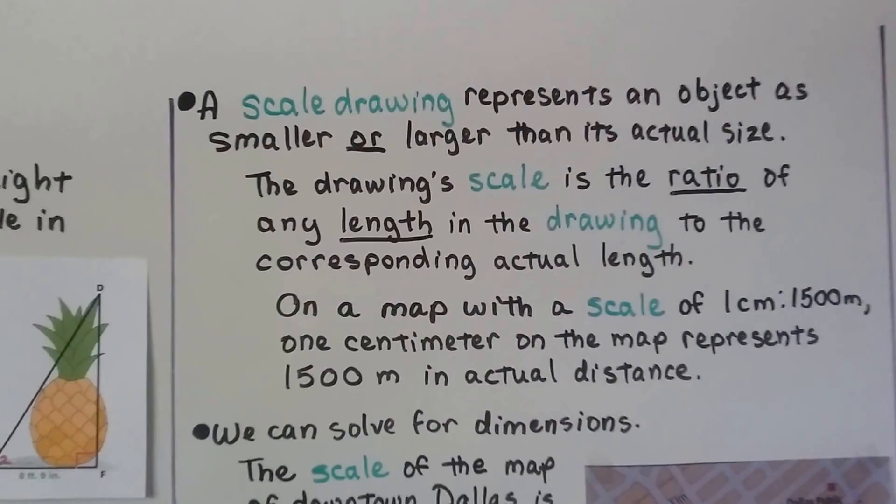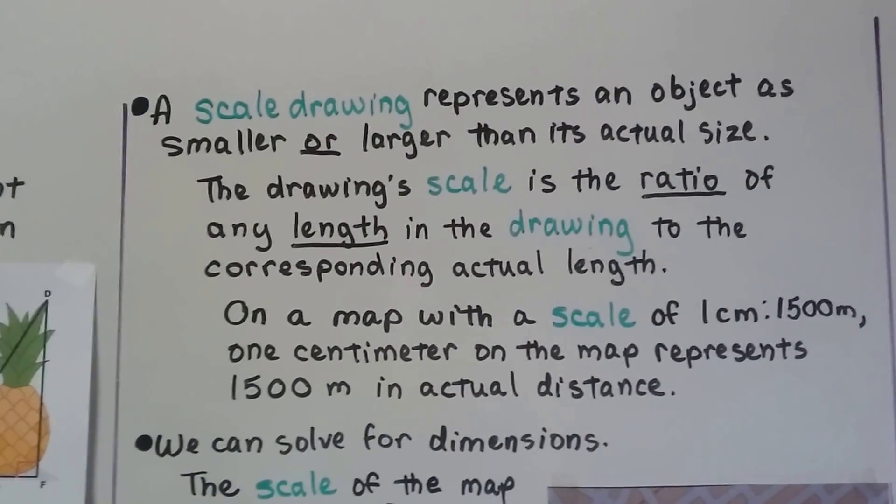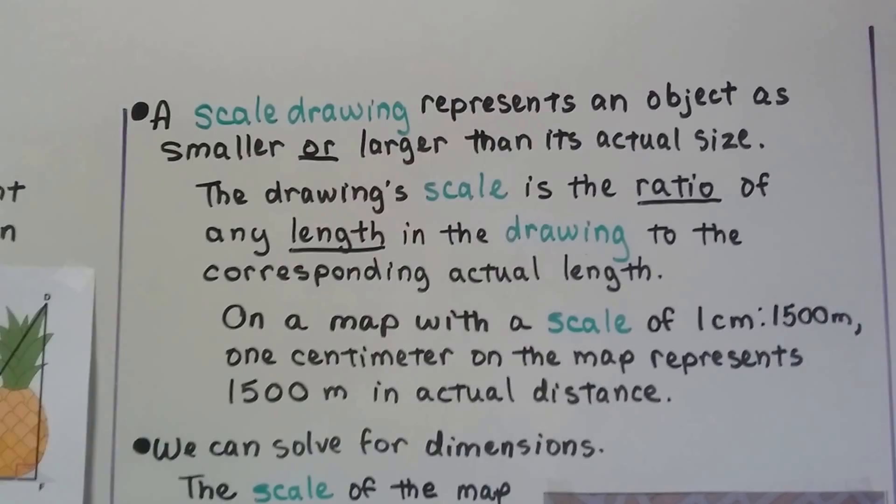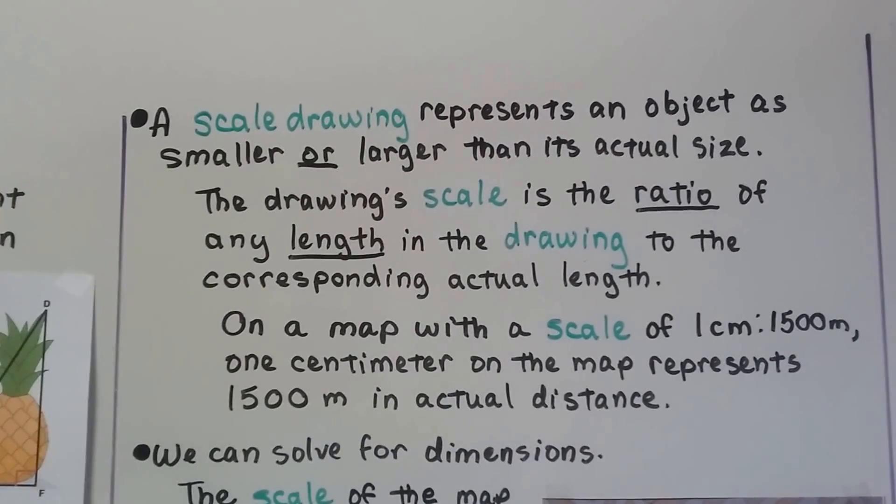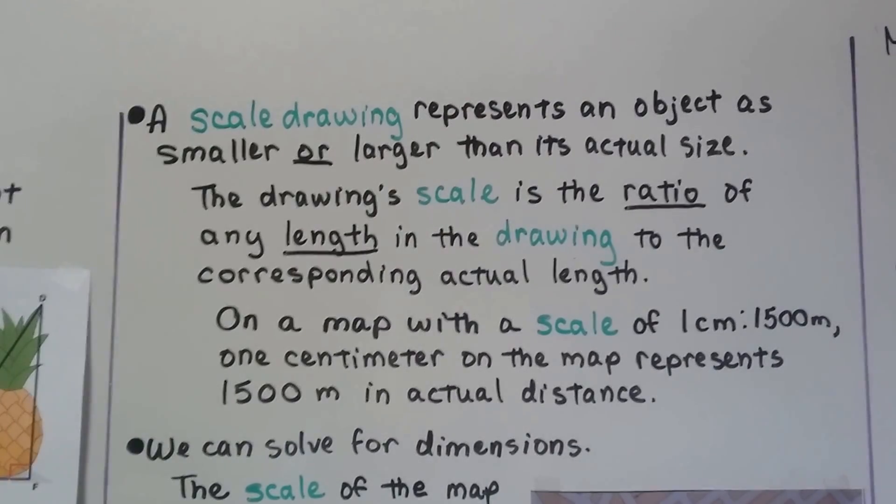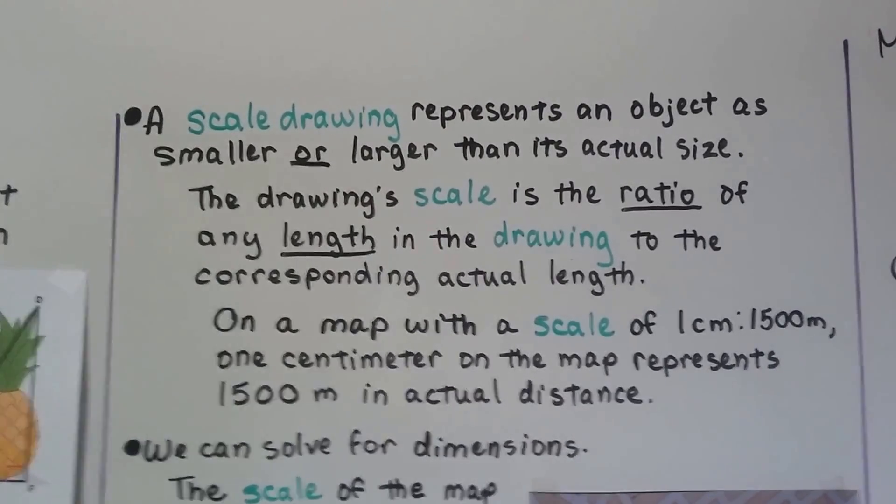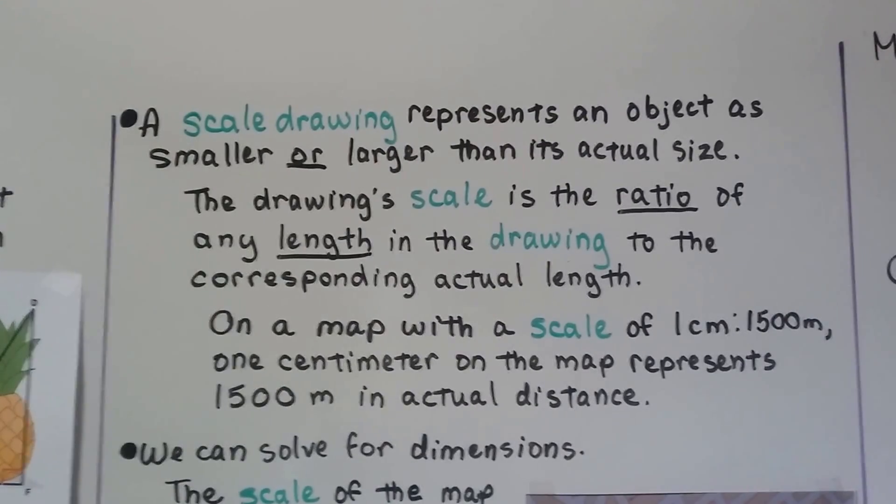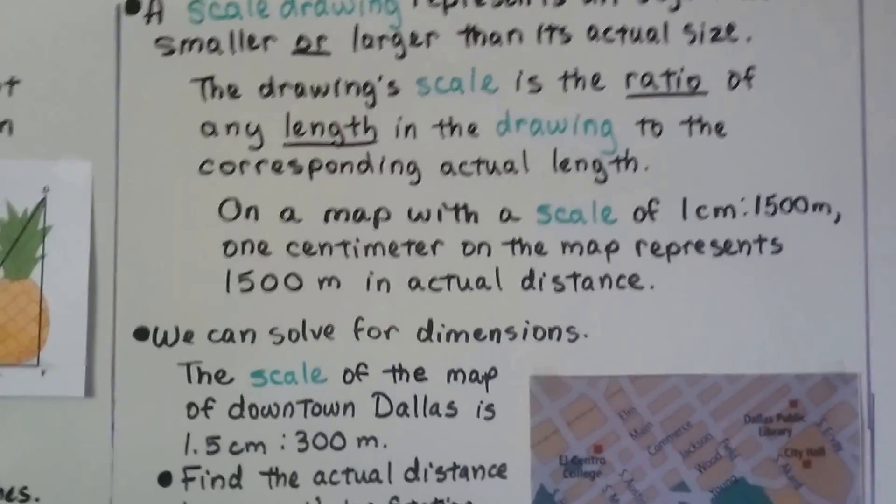A scale drawing represents an object as smaller or larger than its actual size and the drawing scale is the ratio of any length in the drawing to the corresponding actual length. On a map with a scale of 1 centimeter to 1,500 meters, 1 centimeter on the map represents 1,500 meters an actual distance. And we can solve for dimensions.